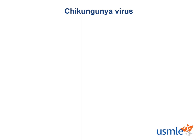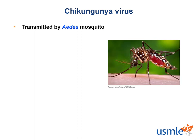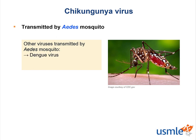Chikungunya virus is transmitted by the Aedes mosquito. The Aedes mosquito is actually the culprit for a number of viruses. Aedes also transmits dengue virus, yellow fever virus, and Zika virus. Those are all flaviviruses.